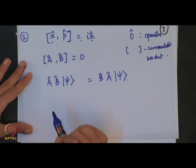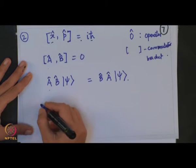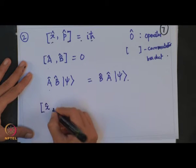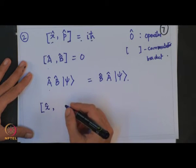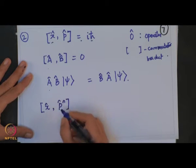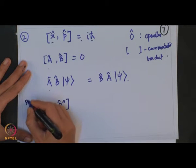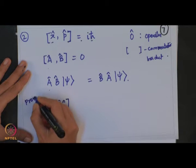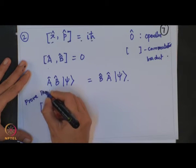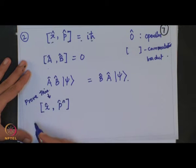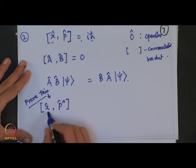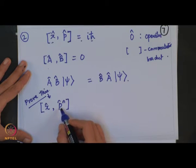This is the relation we obtain. You might have proved this before; if not, please try. I will not discuss the proof in this tutorial but you must try out [x̂, p̂ⁿ].